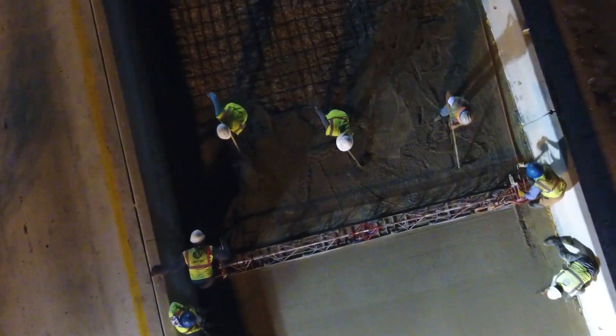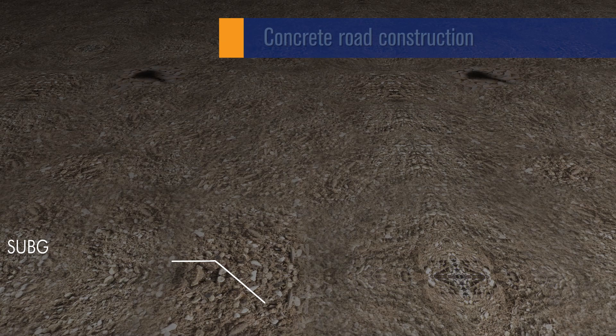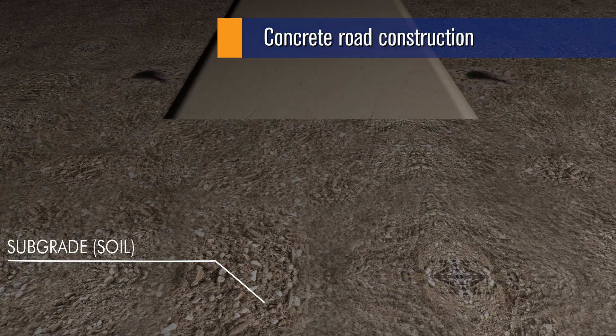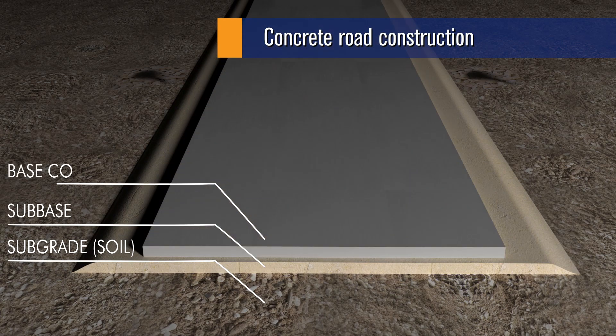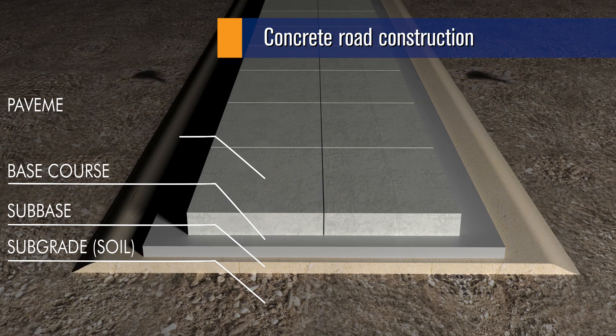Concrete roads typically consist of a compacted subgrade of existing soil, if needed a granular subbase, a base course, lean concrete, and a surface course made of pavement quality concrete.